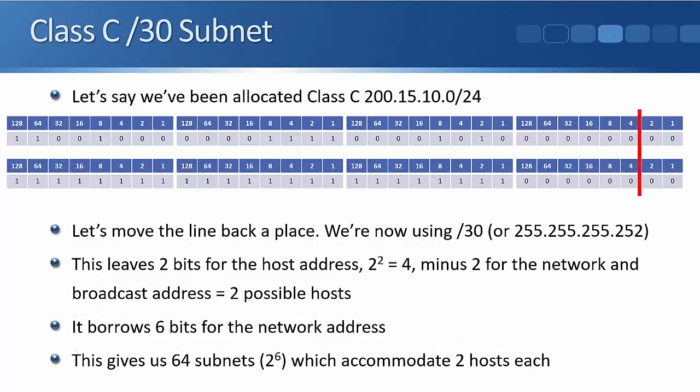Next up, we're going to move the line back a space and create a /30. The subnet mask in dotted decimal is 255.255.255.252 - /30 and 255.255.255.252 mean the same thing. That leaves two bits for the host address. Two to the power of 2 is 4, minus 2 for the network and broadcast address, gives us two possible hosts. It borrows six bits for the network address.